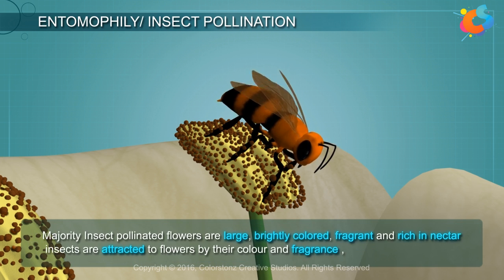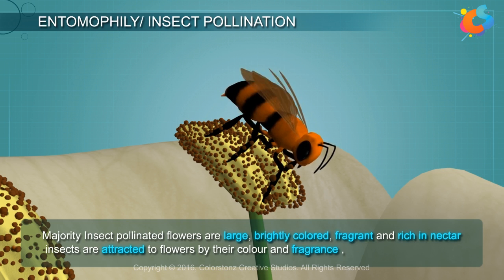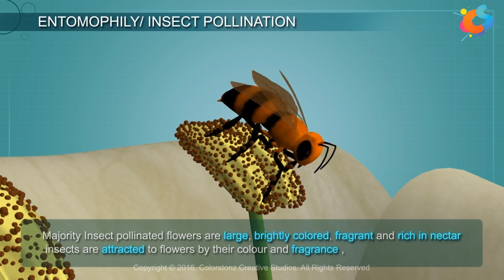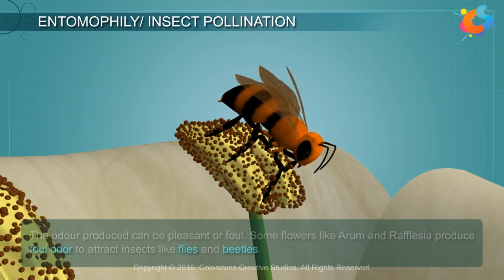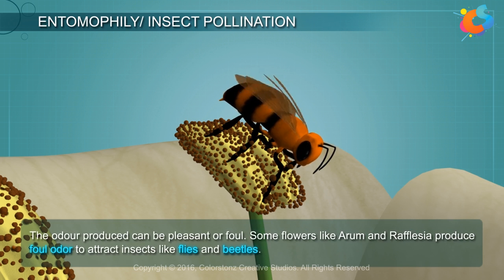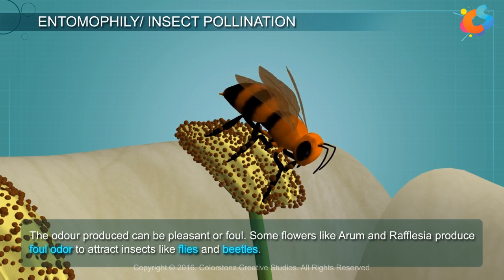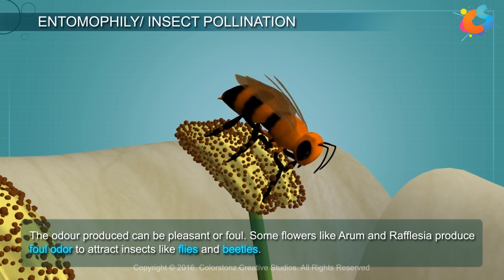The majority of insect-pollinated flowers are large, brightly colored, fragrant, and rich in nectar. Insects are attracted to flowers by their color and fragrance. The odor produced can be pleasant or foul. Some flowers like Arum and Rafflesia produce a foul odor to attract insects like flies and beetles.